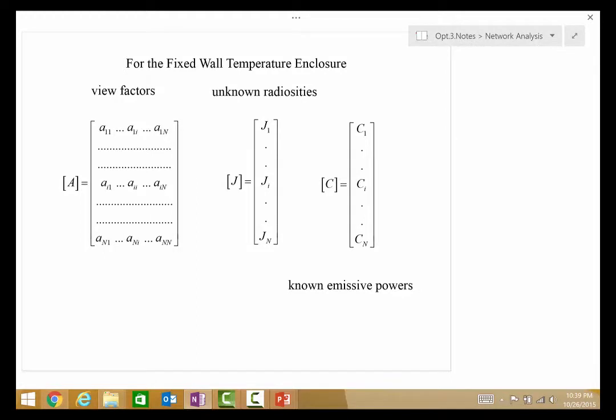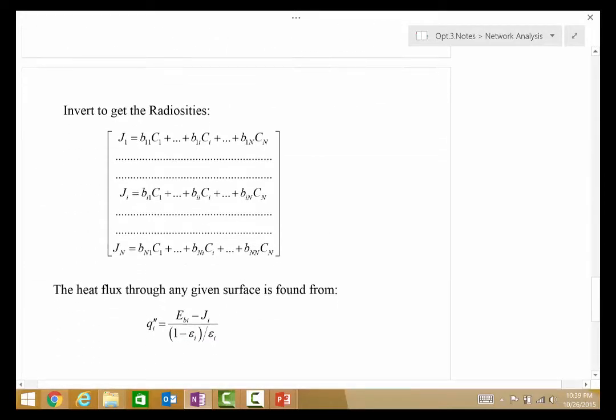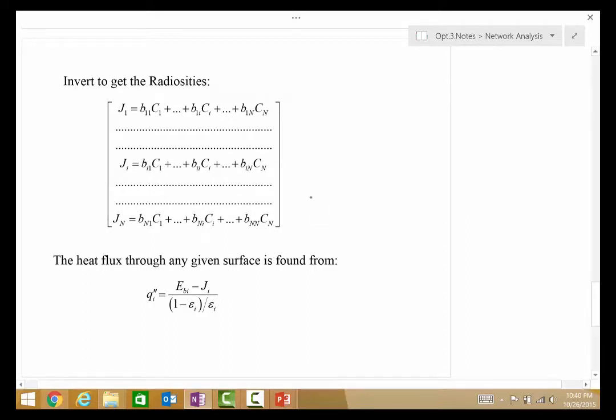So, for the fixed wall temperature enclosure, the view factors and the emissivities are in this A matrix. The vector of unknowns is the radiosity, and the knowns are the emissive powers. As I mentioned before, we would invert to get the radiosities. Once we have the radiosities, then we know what the heat fluxes are in each individual surface.